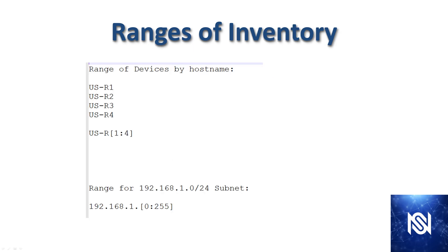Here we have a couple of examples of how to define ranges of inventory. A list of four devices is equivalent to using brackets with a colon to specify one through four. There's also another example at the bottom using the bracket-colon syntax to effectively summarize an entire subnet. If we were defining our devices by IP address, any device with an IP address in that subnet would be considered part of that group.